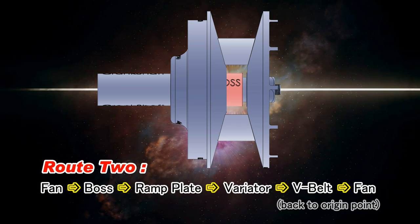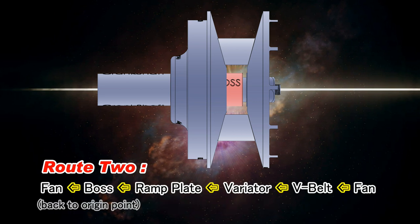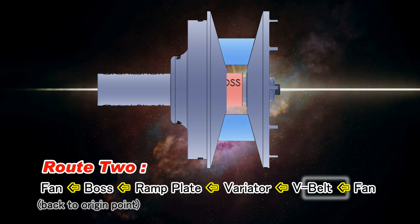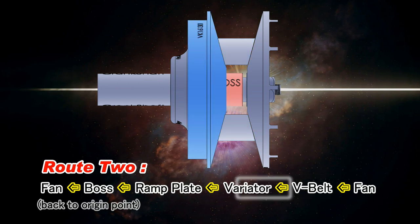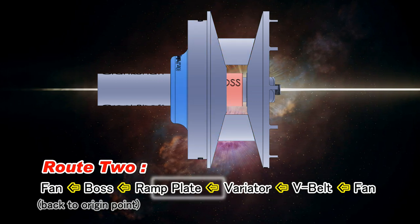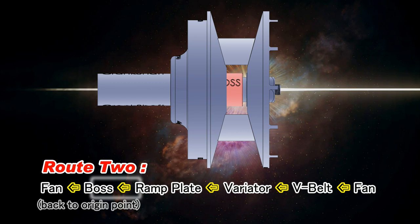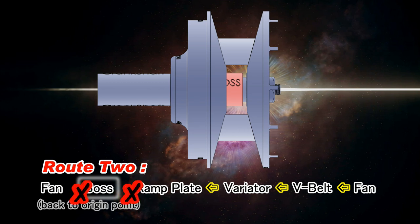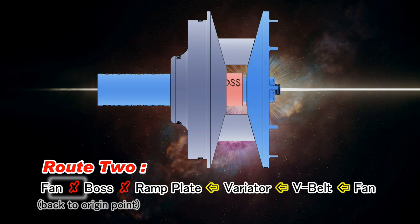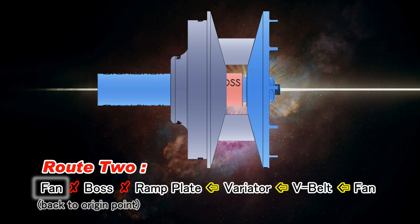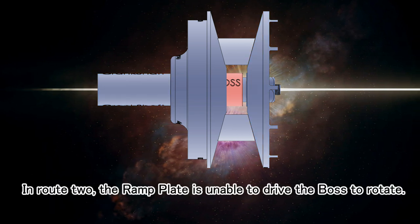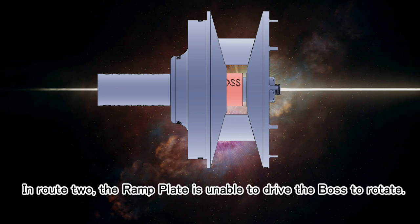Route two: fan, V-belt, variator, ramp plate, boss, fan back to origin point. In route two, the ramp plate is unable to drive the boss to rotate.